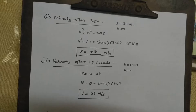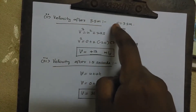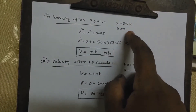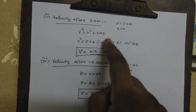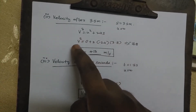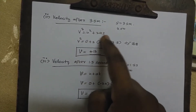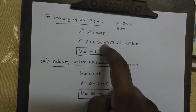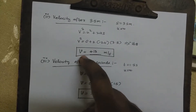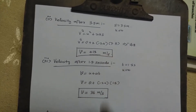We have to find the velocity after 3.5 meters distance. So S equals 3.5, initial velocity U equals zero. Using V² equals U² plus 2AS: V² equals 0 plus 2 times minus 24 times 3.5, which gives minus 168. V equals approximately 13 meters per second.